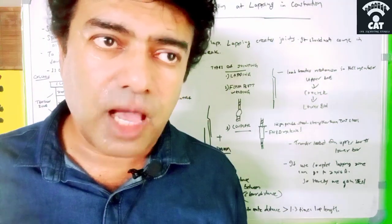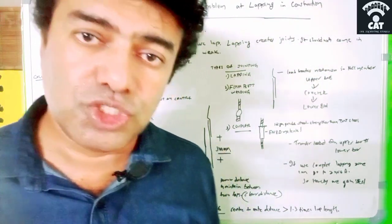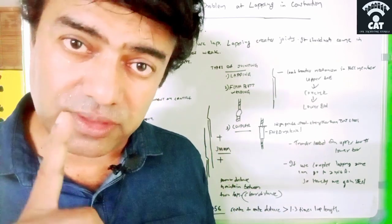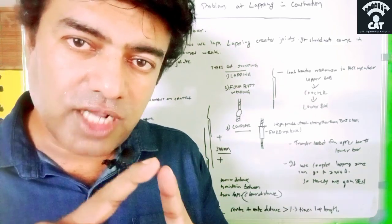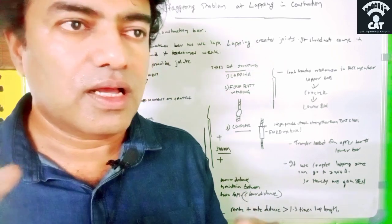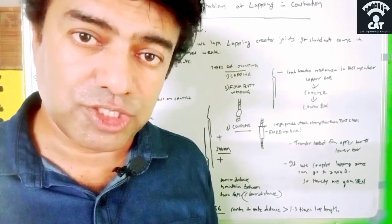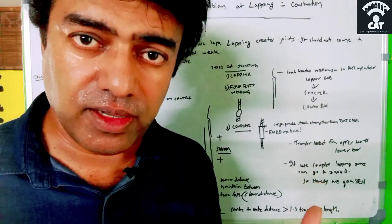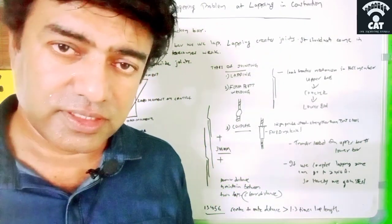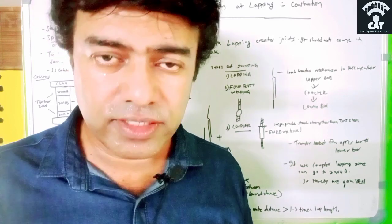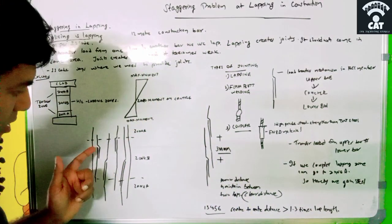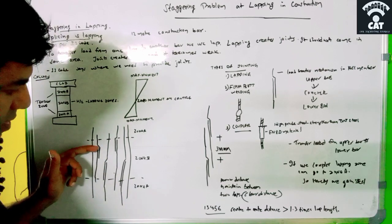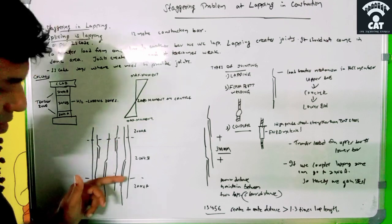Why can't all laps come in the same line? Because at a joint, stress is maximum. If all joints are at the same line, the stress will be maximum along that entire line in the column, making it the first point of failure when load exceeds a certain limit. To distribute the stresses across the joints, we provide them at different points — one, two, three, four — so they fall within Zone B at different heights.